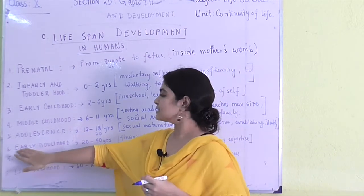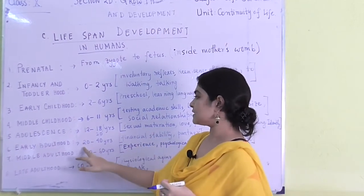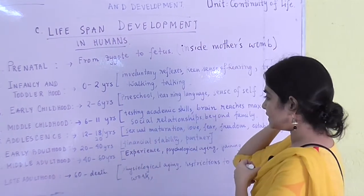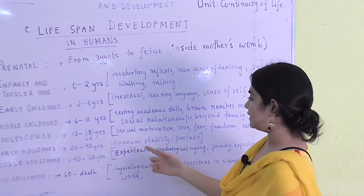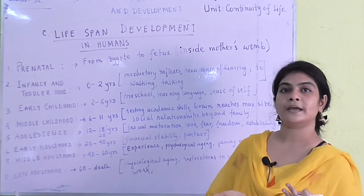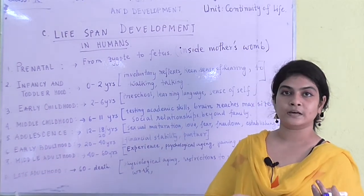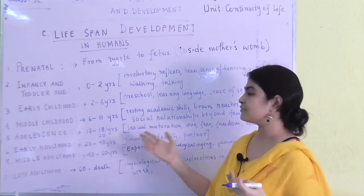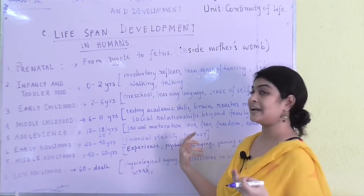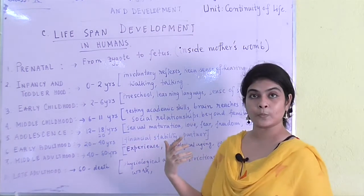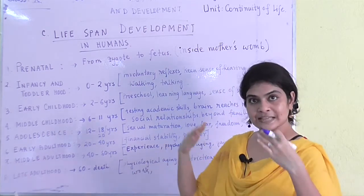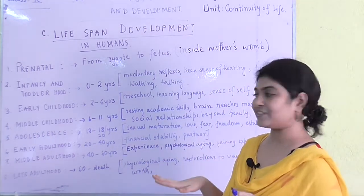Early adulthood covers twenty to forty years of age. It includes financial stability — having completed academic career, one is now starting a financial career, getting married, and settling down to a certain level.